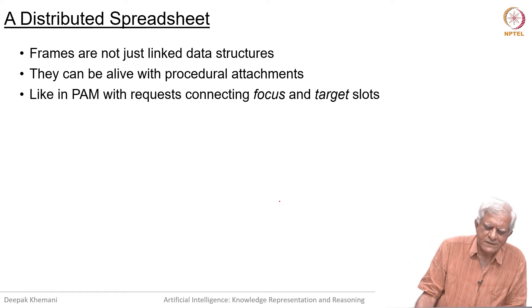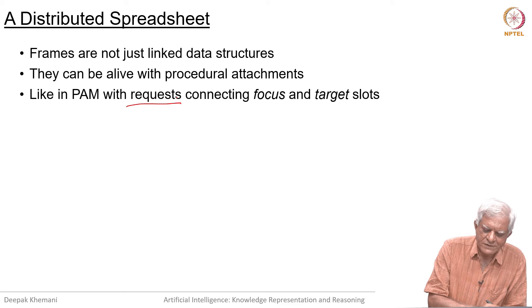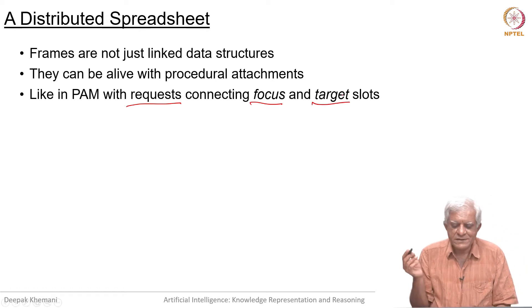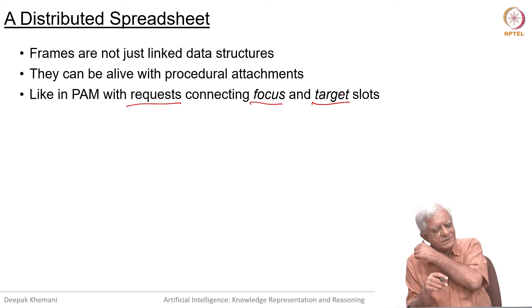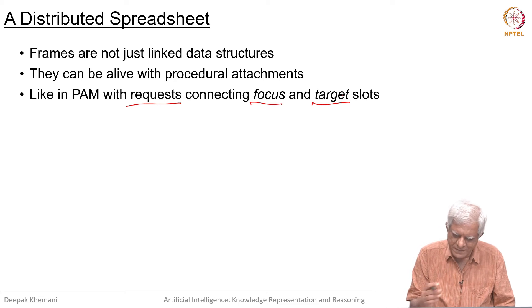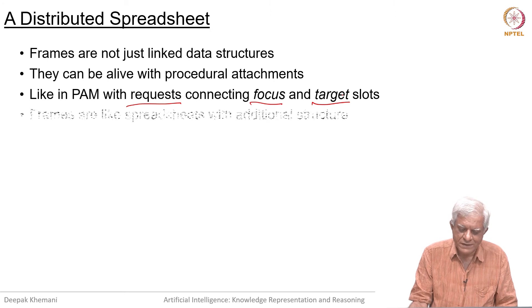We also saw that this was happening in the program PAM when we had requests. Remember, requests are their terminology for rules, and focus is where the request is focused, and target is where the effect is felt essentially. The moment something changes in the focus, something changes in the target. So in that sense, it is a little bit like what happens in spreadsheets — we can have procedural attachments which are propagating effects.